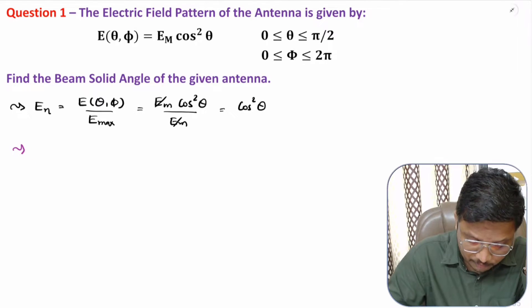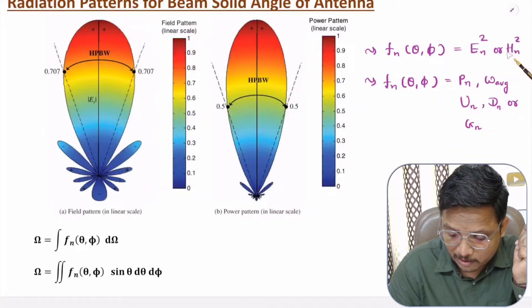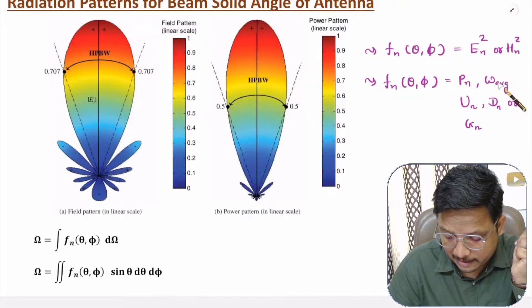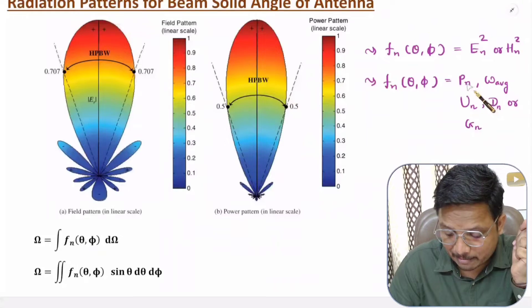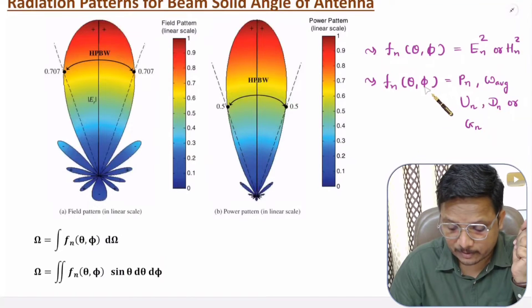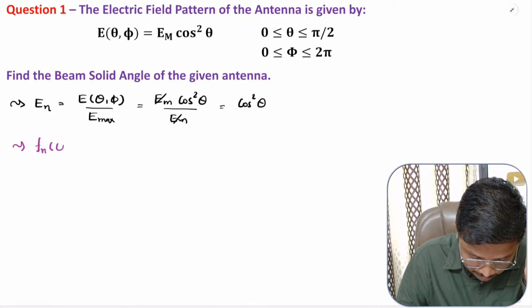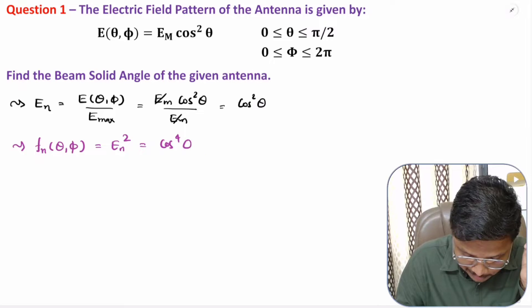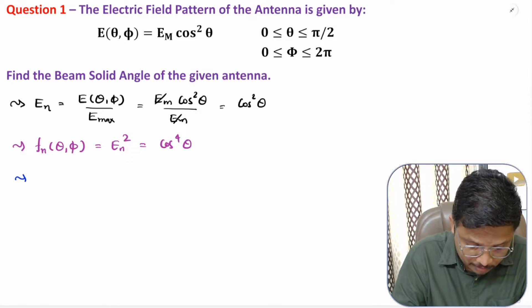The function here is the square of the electric field or square of the magnetic field. If you have power, average power density, radiation intensity, directivity, or gain, in that case by directly normalizing it you can take it as the function. Since we have electric field here, the normalized function in terms of θ and φ is electric field squared, which is cos⁴(θ). Now we have the function, so based on it we can calculate the beam solid angle.